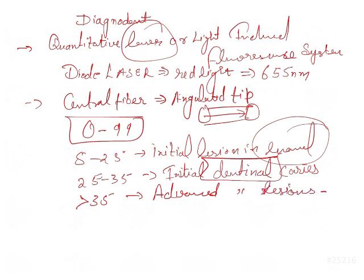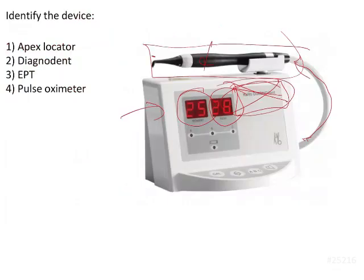So this is how you can diagnose with the Diagnodent. Here you will see the angulated tip is there, and there will be a central fiber that is running to it, and there is a diode inside it that will be emitting a light of around 655 nanometers. Then you will be getting some display here, and this particular display is going to tell you the reading. So if it is between 5 to 25, it can be 25 to 35, it can be above 35, and you can find out the inference from here.